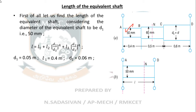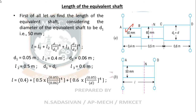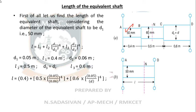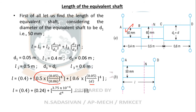Substituting all the numbers: D1 is 0.05 m, L1 is 0.4 m, D2 is 0.06 m, L2 is 0.5 m, D3 is unknown, and L3 is 0.6 m. Solving all terms except D3, we get: L = 0.4 + 0.24 + 3.75×10⁻⁶ / D3⁴. Keep the D3 term unsolved as Equation 1, since D3 is unknown.